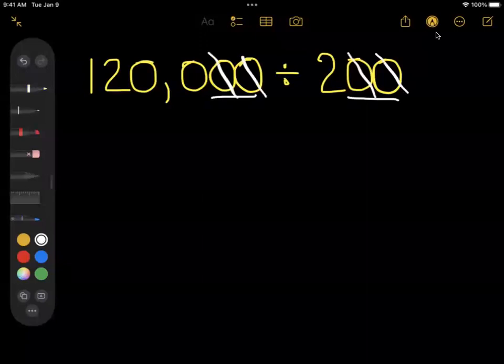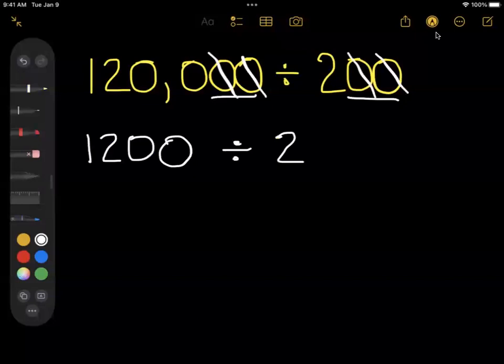That means I'm really taking... this number then becomes 1,200. And now we are dividing it by two, which is a lot easier for us to do.